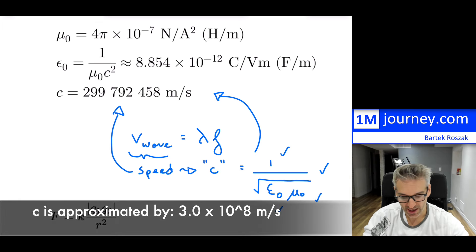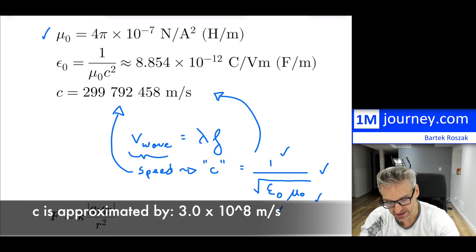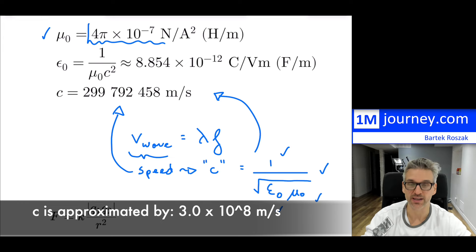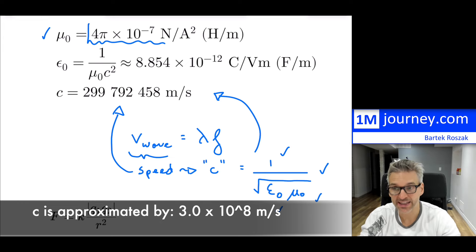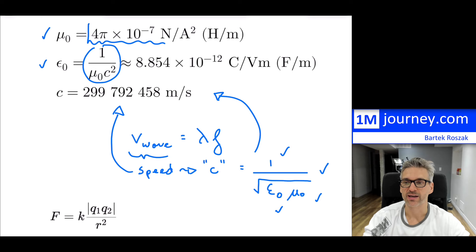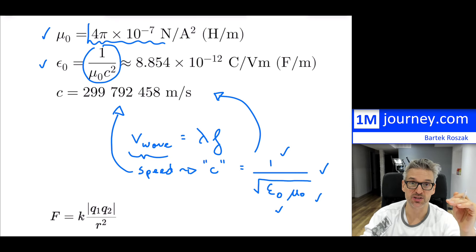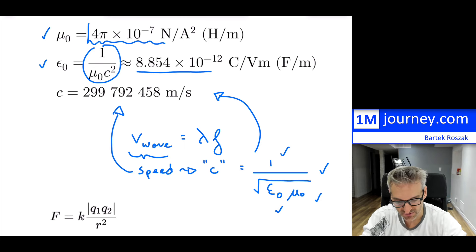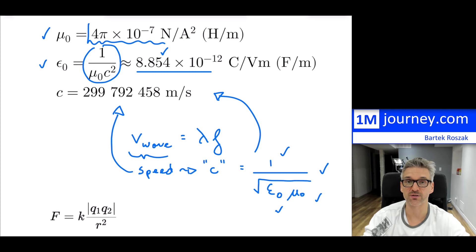So if you take these two constants and do this calculation, this is exactly what you're going to find. The permeability constant is an exact value, and the permittivity constant is actually defined with respect to that — it is 1 over the permeability constant times the speed of light squared. Substituting that in gives you that numerical value.